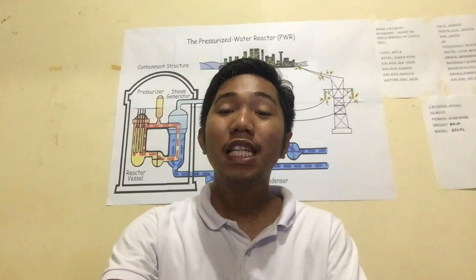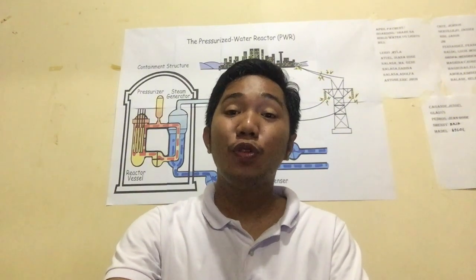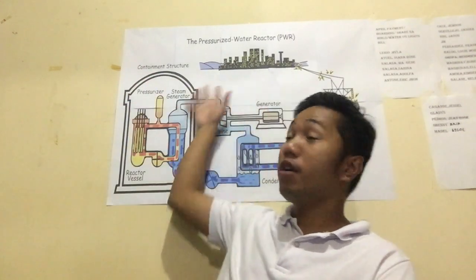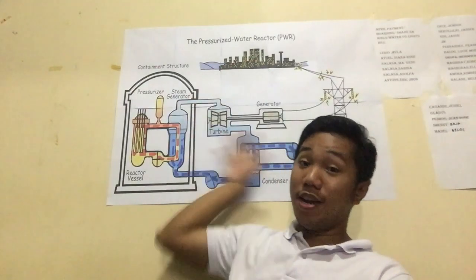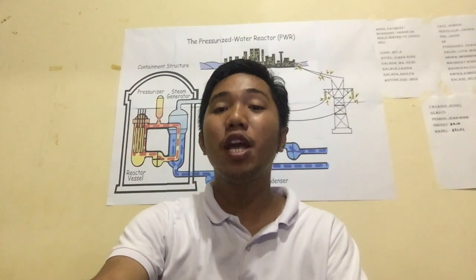The coolant system circulates water through the reactor core to remove heat generated by the nuclear reactions and prevent fuel overheating. In the PWR, water under high pressure is used as both coolant and moderator.